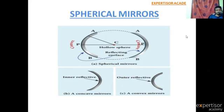Mainly, spherical mirrors are two types. The first one is Concave Mirror and the second one is Convex Mirror.